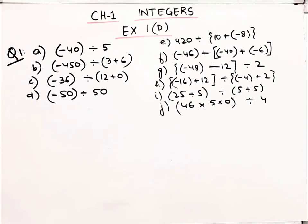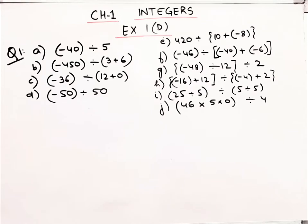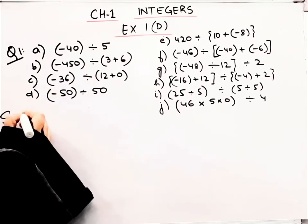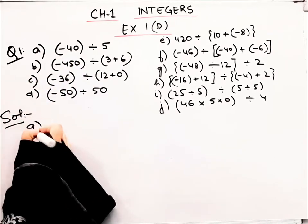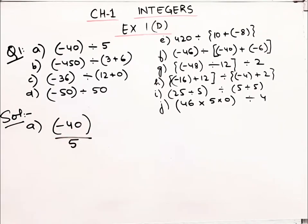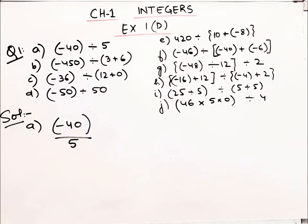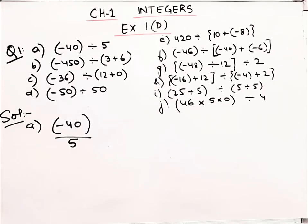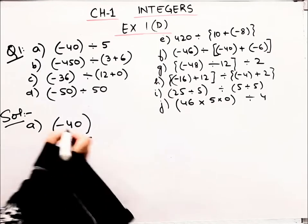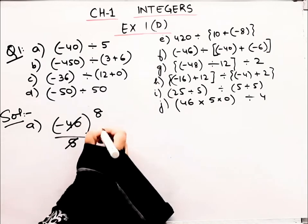Hello everyone, welcome to Brain O Solution. Today we will do question number one from Exercise 1(D). You have to evaluate the following. Starting with the first one, part (a): minus 40 divided by 5. What do we do with the sign? We will forget it now and divide. 40 divided by 5.